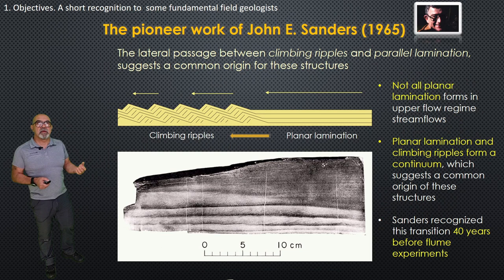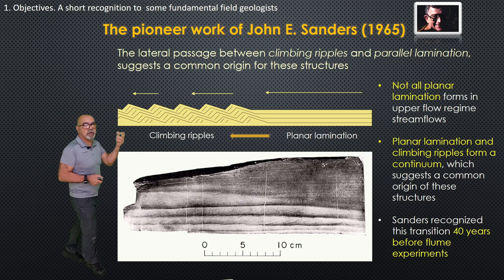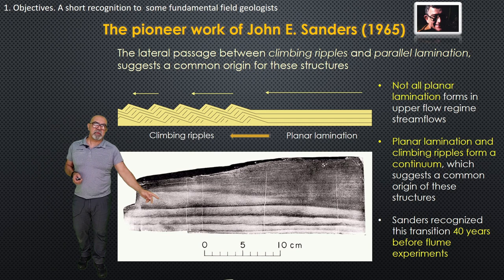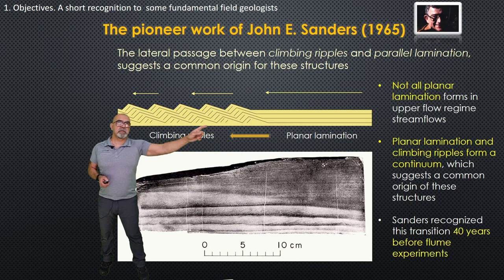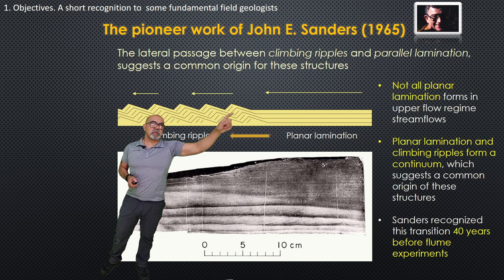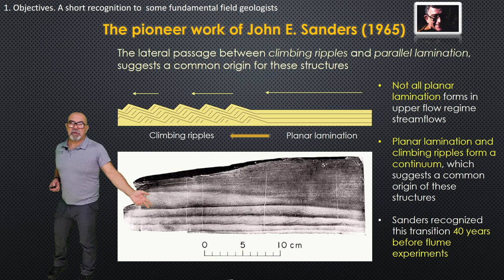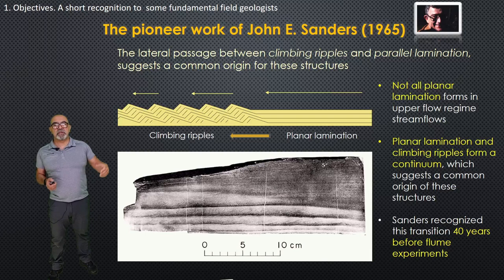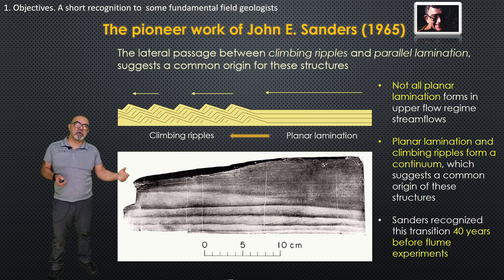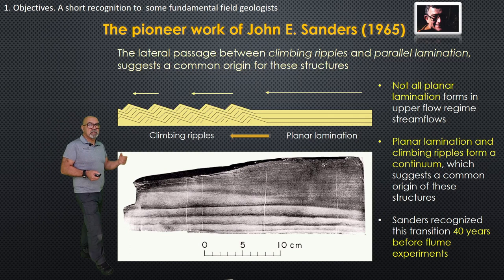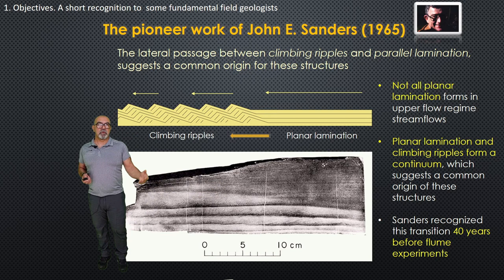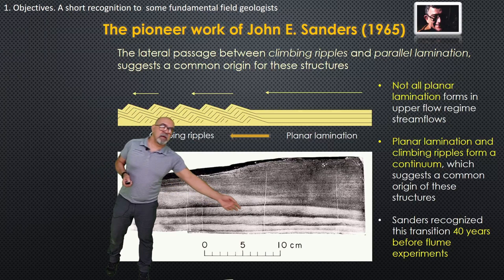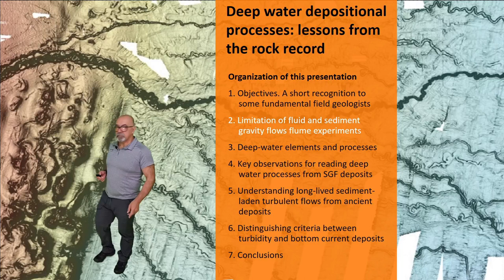The work of John Sanders was very clever and smart. In a polished section, Sanders documented the lateral transition between planar lamination and climbing ripples. We now know this transition represents a decrease in flow velocity. According to Sanders, climbing ripples and planar lamination both represent sedimentary structures related to a similar origin, probably related to traction plus fallout from a turbulent suspension. Just with simple observation and correct interpretation, we can understand processes from fossil rock — we don't need very complicated flume experiments.